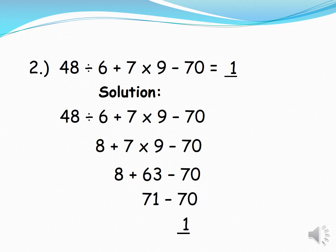Example 2: 48÷6+7×9−70=1. Solution: 48÷6=8, then 7×9=63, then 8+63=71, then 71−70=1.